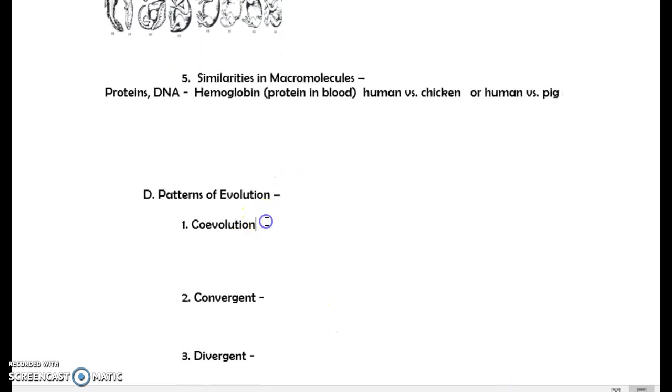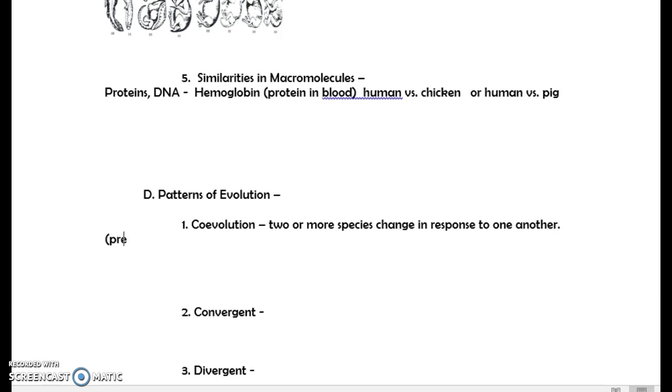Co-evolution, the prefix co we've seen with maybe co-dominance where both things show through. This is when two or more species change in response to one another. For example, predator and prey. If the prey gets faster, the predator needs to as well. They need to change with each other. If the predator gets faster, the prey, only the ones that survive will be faster. So it's this back and forth that if one gets better, the other, the only ones that will survive will be the ones that were at the top of their game at that moment.